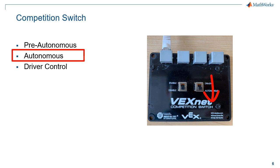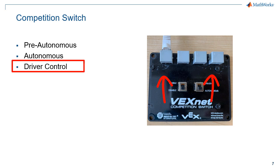Once the Enable Switch is toggled to the Enable position, the Autonomous Mode will be triggered and your autonomous algorithm should start. Then the referee will toggle the Mode Switch into the Driver position, which marks the beginning of the Driver Control Mode of the competition.